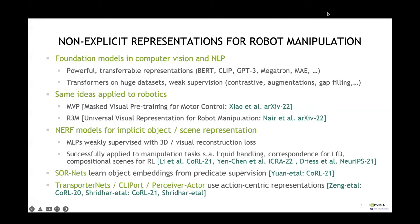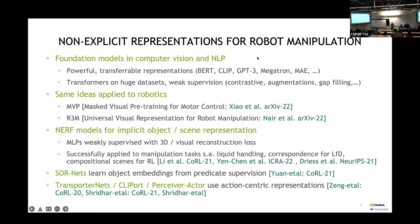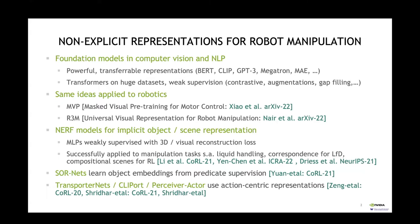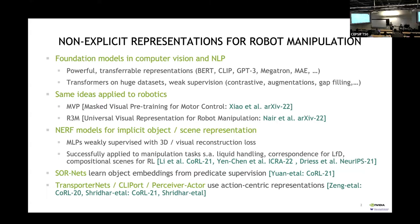Just to put this a bit into context: I call this non-explicit representations, because when you say implicit representations it seems to encompass a very specific kind of representation. But of course there are many other kinds of representations that we're using for manipulation tasks that are not specifically explicit. By explicit, I would mean that we have explicit 3D shape models of the objects, and that we typically focus on estimating the 6D pose of an object and then do planning and manipulation with these kind of models.